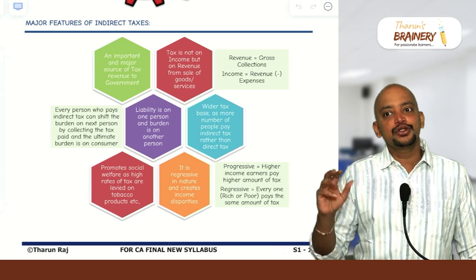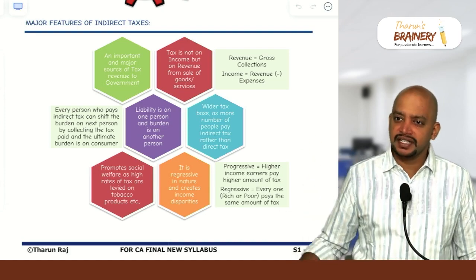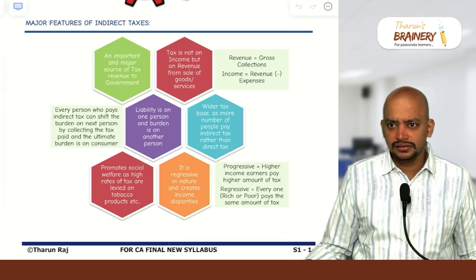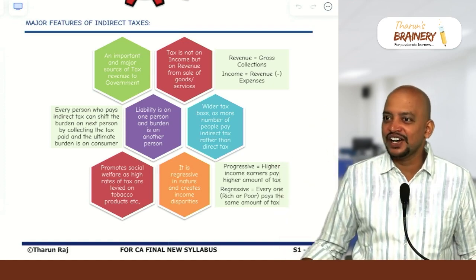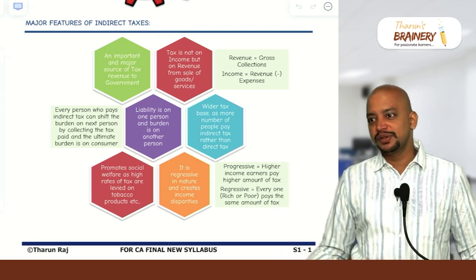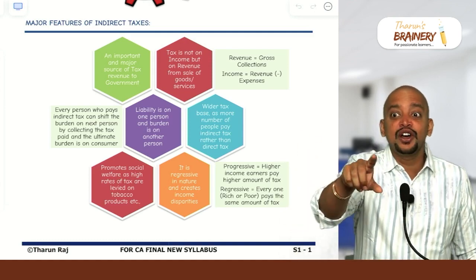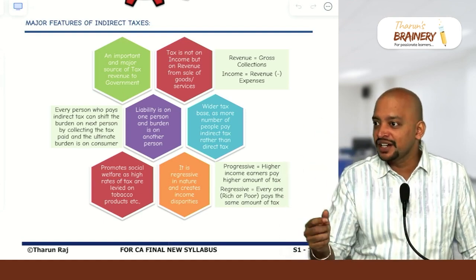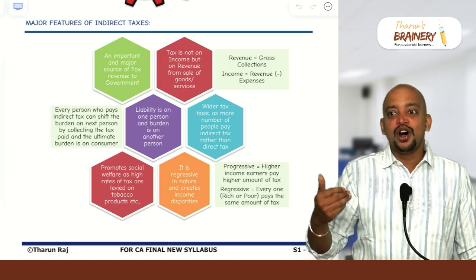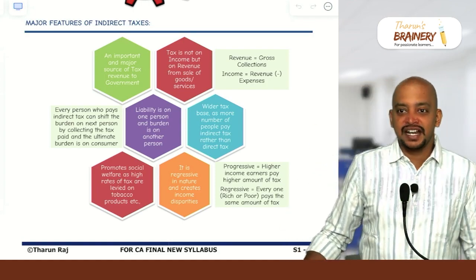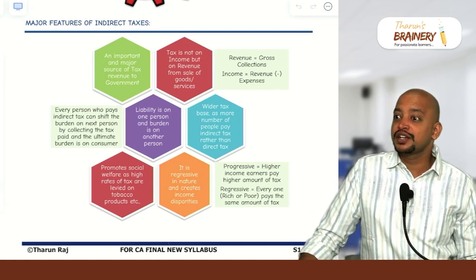Take the example of hostels. Usually what will be the monthly charges? Let's take 15,000 all inclusive — that is really on the higher end. But even then, per day it will not cross 1000 rupees: 15,000 divided by 30 or 31 is less than 1000 rupees. Previously, all hostels were enjoying this exemption. But now the 1000 rupees exemption threshold is removed, so every hostel will be covered under taxability and all hostels are required to pay GST.